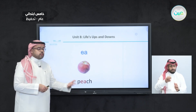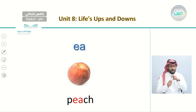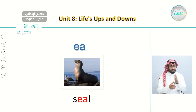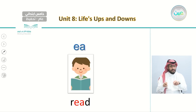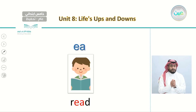Now let's move on to words that have the EA sound. The first one is peach — say with me, peach — which is a fruit. Then we have meat. And we have seal — say with me, seal — which is an animal that lives in the sea. And finally, read. These are the EA words.